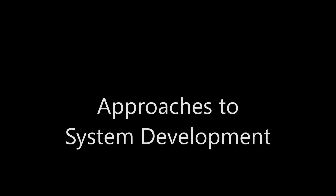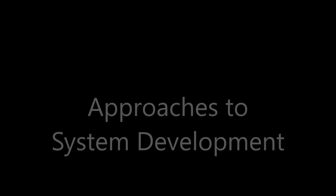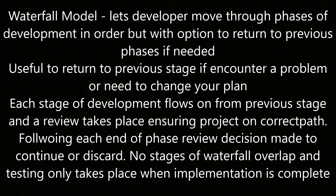Approaches to system development. The waterfall model lets the developer move through the phases of development in order, with the option to return to the previous phase if needed. Each stage of development flows from the previous stage and a review takes place ensuring the project is on the correct path. At the end of each phase, a review decision is made to continue or discard. No stages of the waterfall overlap and testing only takes place when implementation is complete.